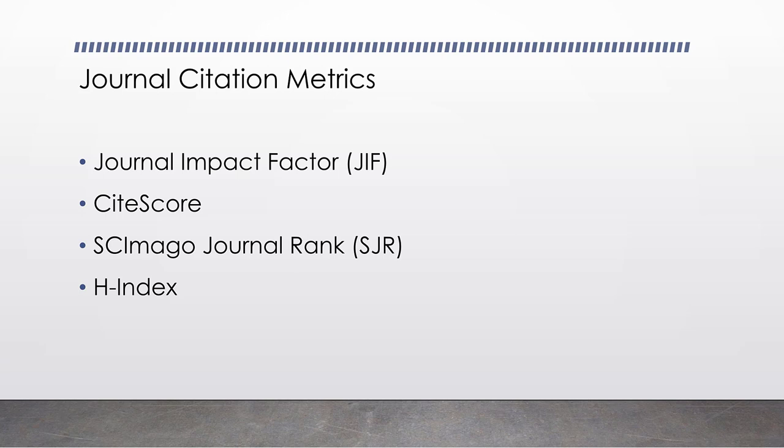Next is the SCImago Journal Rank, or SJR. This is a ratio of the average number of weighted citations received in a year over the number of documents published in the journal in the previous three years. It's similar to CiteScore, but the difference is that these are weighted citations — this ranking metric takes into account where the citations occurred and weights them based on the prestige of the journal in which the citation appeared. So if two articles are each cited five times but yours appears in higher-ranking journals, you would have a higher SJR ranking.